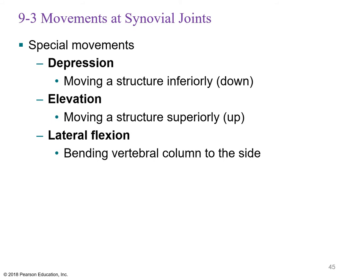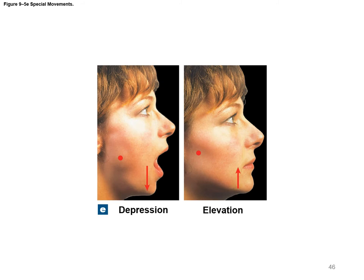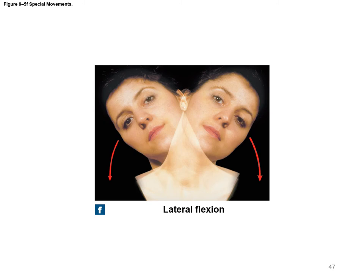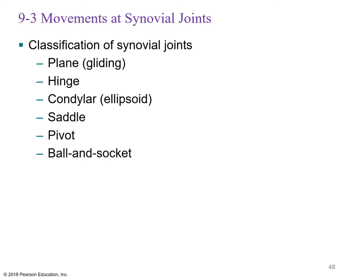Depression moves a structure downward — like opening the mouth. Elevation brings it up — like closing the mouth. Lateral flexion is bending to the side, such as tilting the ear toward the shoulder.